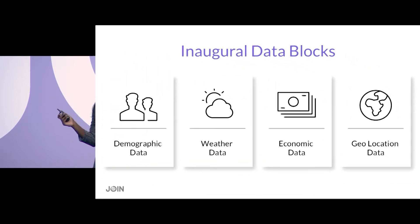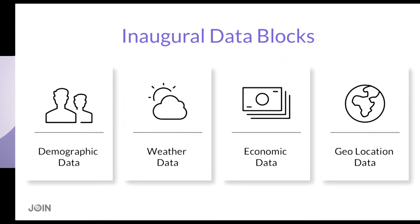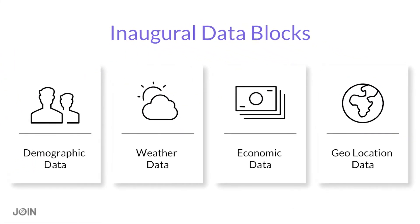So with that, I'm excited to announce the launch of our inaugural data blocks. We're going to have demographic data at a very granular level — five times more granular than the zip code level. It'll be at a block group level, and you'll be able to look at income metrics, age, gender, race, and population metrics at that granular level.